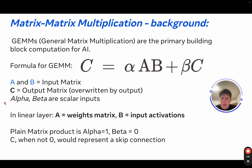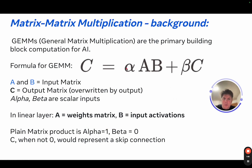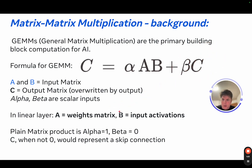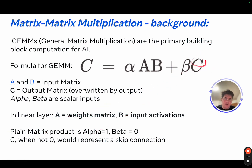In a linear layer, A would be your weight matrix and B would be your input activations. Typically what you're normally seeing is just a plain matrix product, so that's where alpha would be one and beta would be zero, eliminating the C on the right-hand side. If C is present, meaning beta is not zero, then C would be a skip connection.